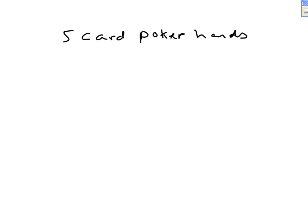Now the thing you need to realize is that if you have the two of spades, the three of clubs, the two of diamonds, the queen of clubs, and the three of spades — those are five cards.